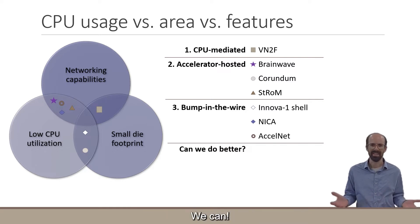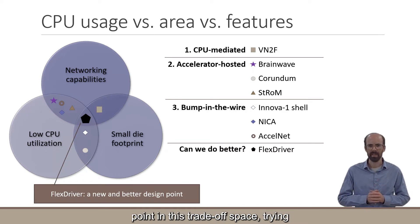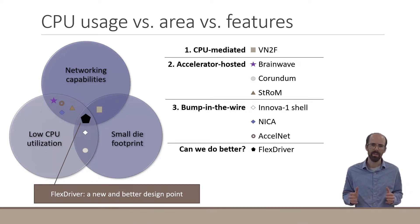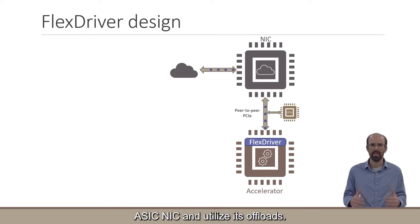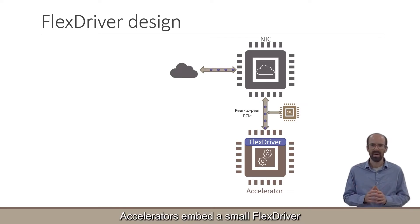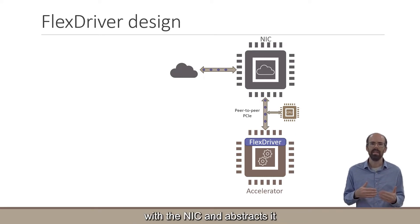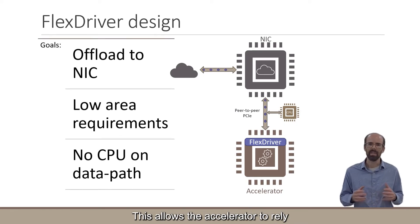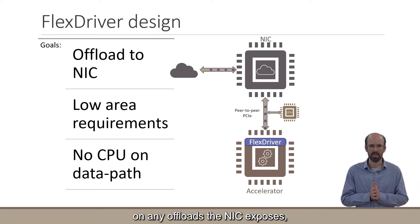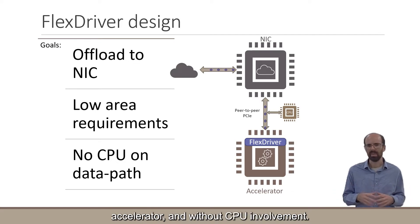Can we do better? We can. Our FlexDriver design adds a new point in this trade-off space, trying to improve on all three parameters. The FlexDriver design uses direct peer-to-peer PCIe interfaces to have an accelerator control an ASIC NIC and utilize its offloads. Accelerators embed a small FlexDriver module which handles all communication with the NIC and abstracts it behind simple hardware interfaces, allowing the accelerator to rely on any offloads the NIC exposes, reducing the needed area on the accelerator and without CPU involvement.